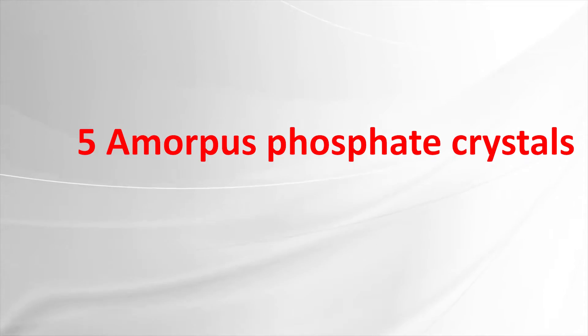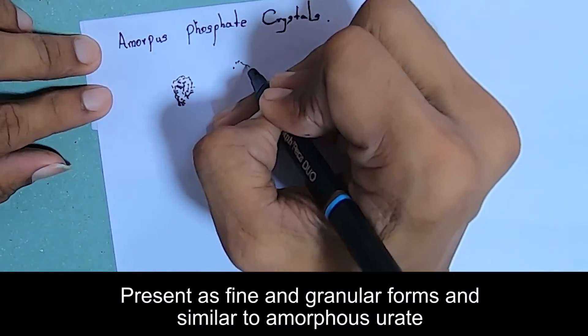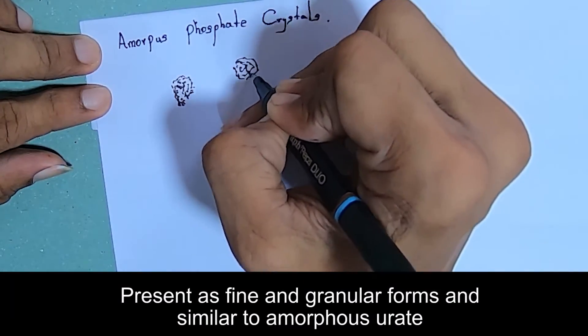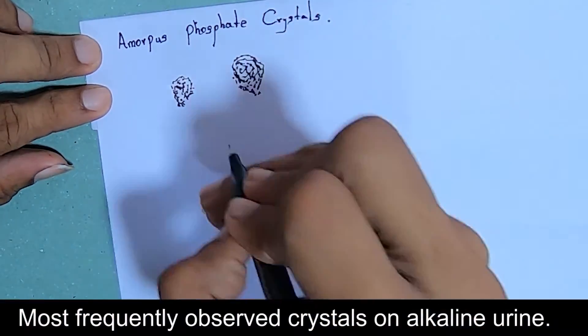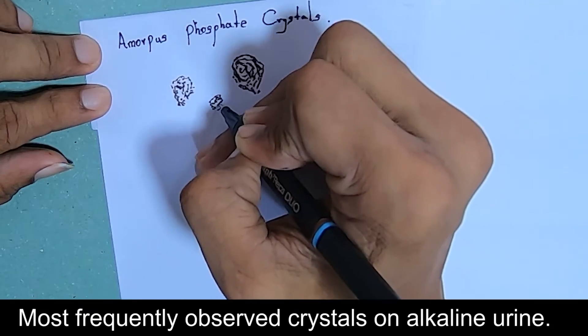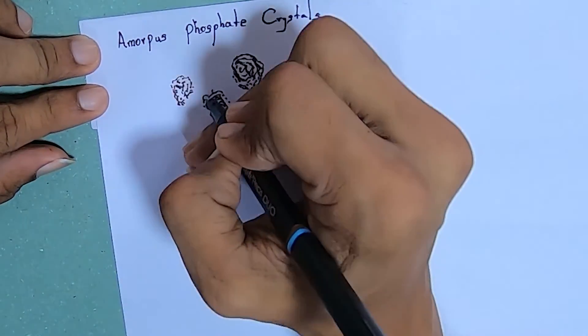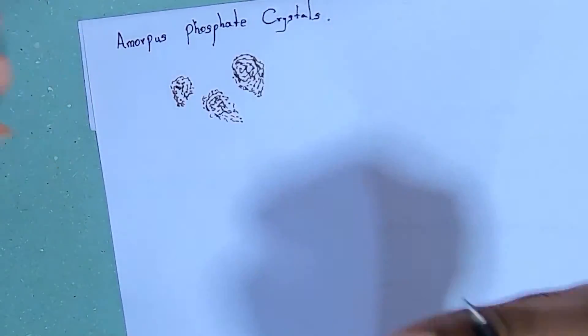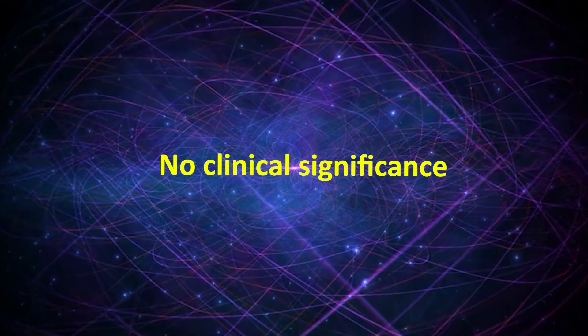Ammonium biurate phosphate crystals are present in fine and granular forms and similar to ammonium biurate crystals which are in acidic urine. These crystals derived from phosphate are the most frequently observed crystals in alkaline urine. They are often present in large quantities. Presence of ammonium biurate phosphate have no clinical significance.